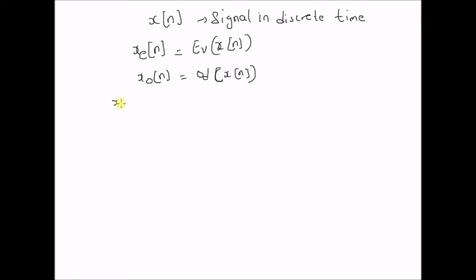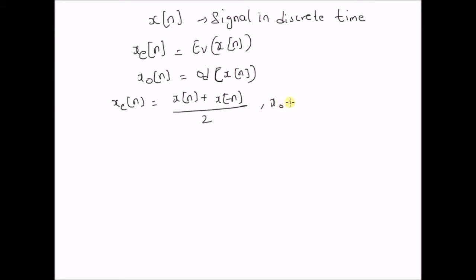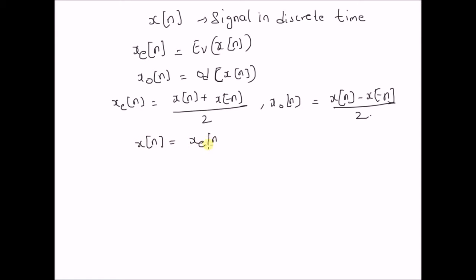The definitions of the even and the odd components of the signal are: x_e of n is equal to x of n plus its reflection x of minus n, over 2. And then x_o of n, the odd signal, is equal to x of n minus x of minus n, over 2. By simply adding these even and odd components, x of n is equal to x_e of n plus x_o of n.